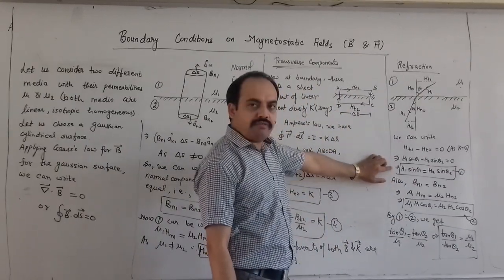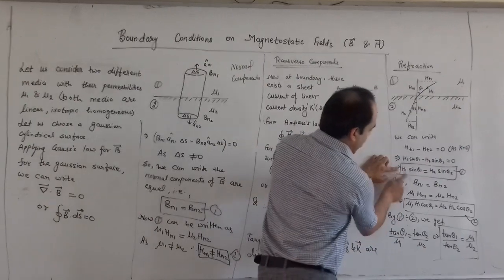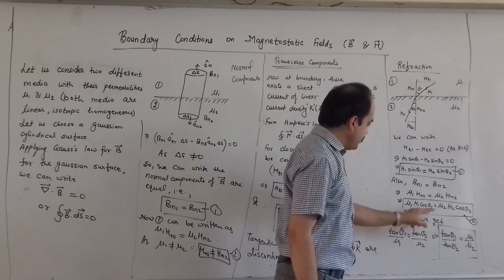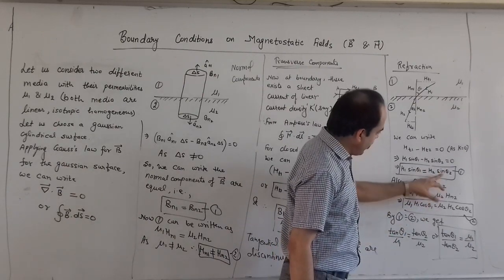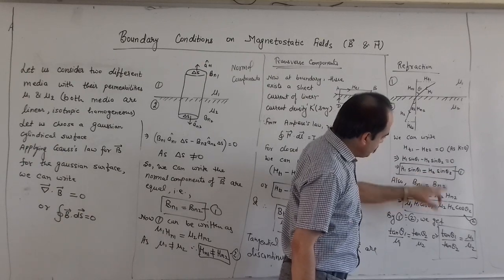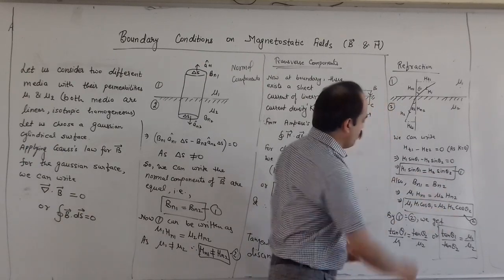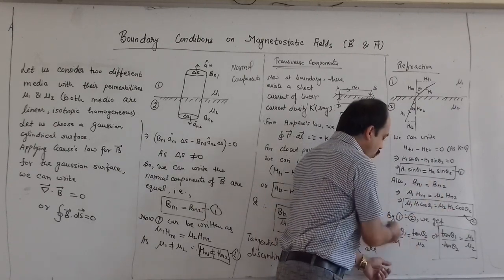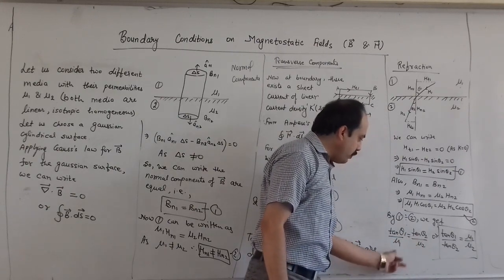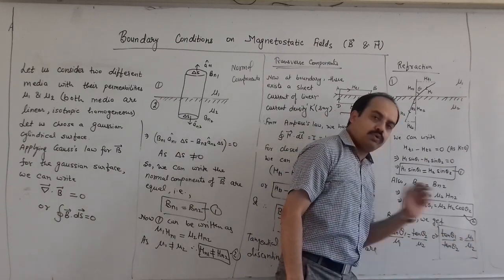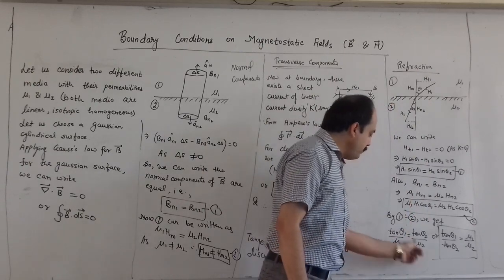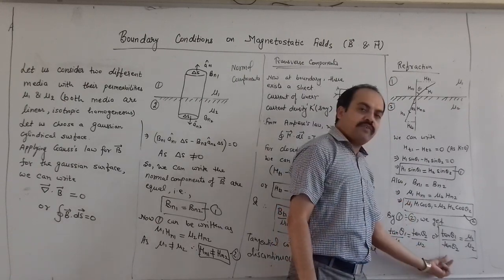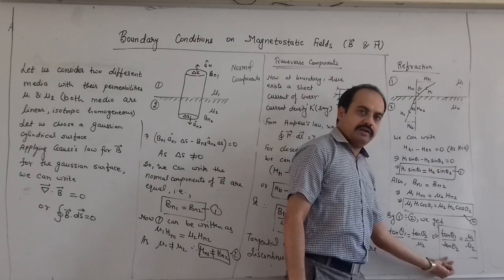Dividing equation number 1 by equation number 2, H1 and H2 cancel out. We get tan theta 1 upon mu1 equals tan theta 2 upon mu2. By cross multiplication we get tan theta 1 upon tan theta 2 equals mu1 upon mu2, or mu2 tan theta 1 equals mu1 tan theta 2. So this is the law of refraction in the case of magnetic fields. Thank you.